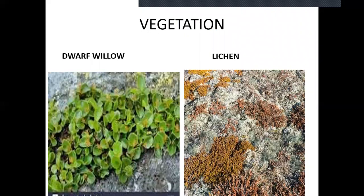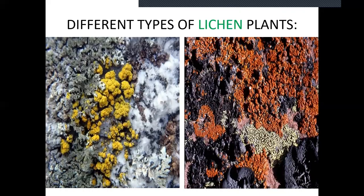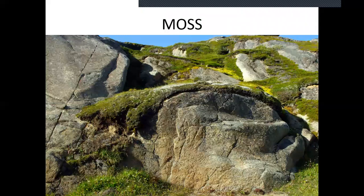The important vegetation includes the dwarf willow, which is the smallest tree in the world. Lichen plants are also found, and lichen is used for making litmus paper. Many types of lichens grow in Greenland only in summer and have a short life. Mosses grow on rocks, like a green carpet spread on the surface. The scenery is very beautiful, but life is very harsh.